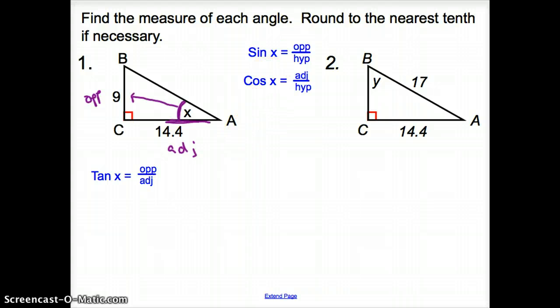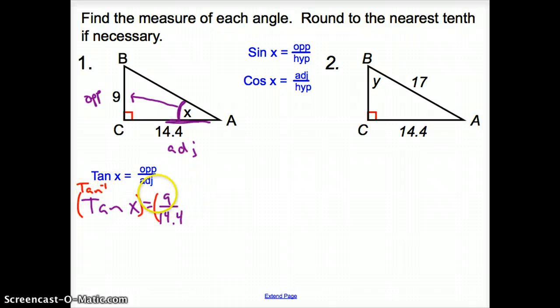So once we get tangent, let's go ahead and set everything up. I go tan, because I need that angle of x. We do not know, so it's just going to be x equals opposite, which is 9 over adjacent, which is 14.4. Now in order to find our angle, we have to get rid of that tan. So in order to get rid of that tan, I have to take both sides times the inverse of that tangent. So I'm taking that tan to the negative first, and that button on your calculator is second tangent.